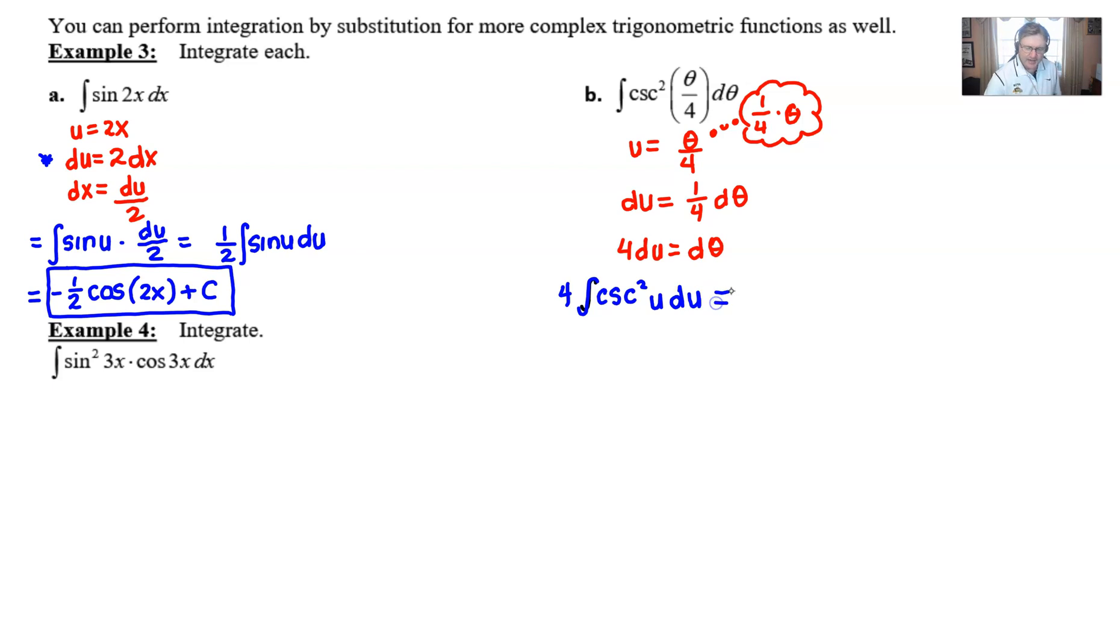Now at this stage, you'd have to understand what is the integration of cosecant squared. It's not something that you have to develop, it's not something that you have to painstakingly calculate. It's something that you just very simply have to memorize. And the integration of cosecant squared is negative cotangent.